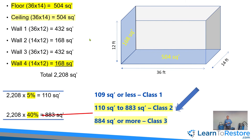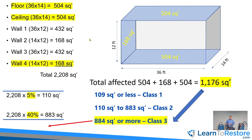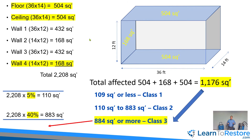If we add the ceiling being wet as well, now we have the floor, the ceiling, and wall number four for a total of 1,176 square feet. Since that's more than the 40% threshold of 883 square feet, that would be a class three loss. So the calculation is pretty simple: do your moisture mapping, figure out the overall surface area in your drying chamber, determine the percentage of what's wet, and that gives you class one, two, or three.